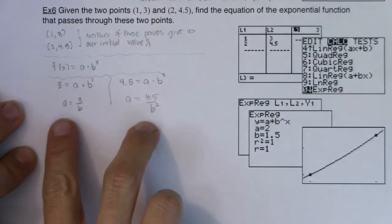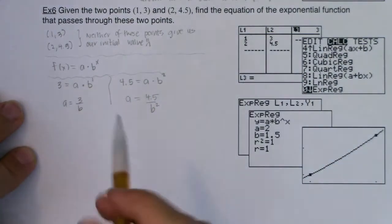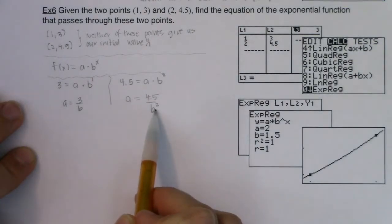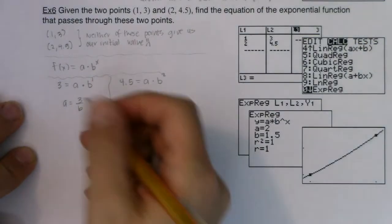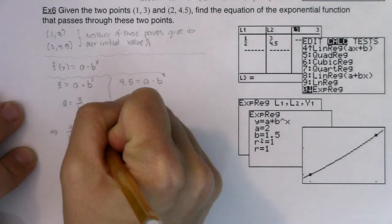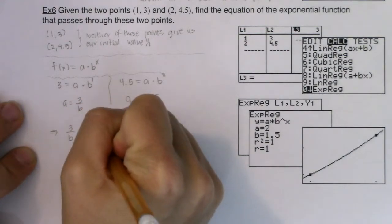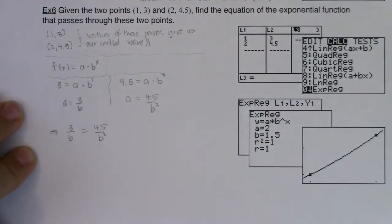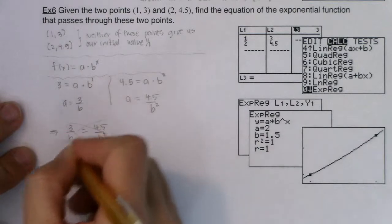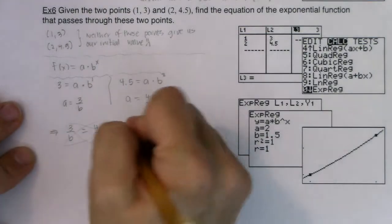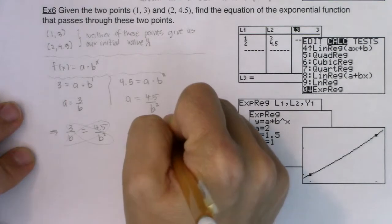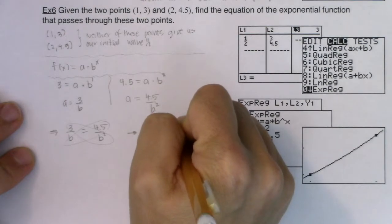Now I have two expressions that are both equal to a: a = 3/b and a = 4.5/b². So through transitivity, we know that 3/b must equal 4.5/b². Now I have a proportion, so I can go ahead and cross multiply, and when I cross multiply I get 3b² = 4.5b.